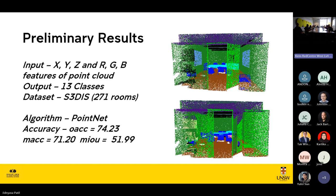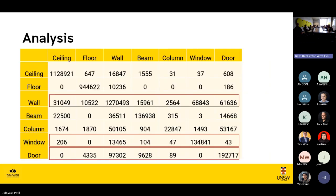These are the basic problem areas we identified: walls get confused mostly with windows and doors. Beams and columns also have confusion, but we don't have enough data to train a model for that. So we are going to focus mostly on walls, windows, and doors. Ceilings and floors have fewer identification issues because they are always at the highest and lowest height respectively. The main errors occur with walls, windows, and doors.